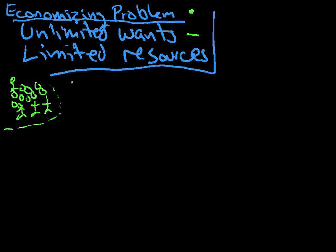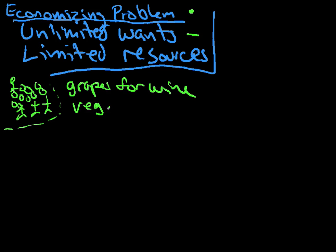Here are their unlimited wants: they can produce grapes for wine — they like to drink their wine — or they can grow vegetables. That's a representation of unlimited wants. Of course, in our society the list is endless; that's the unlimited part. And limited resources: here they have labor, what they can do. We're going to say the resources are labor and land.